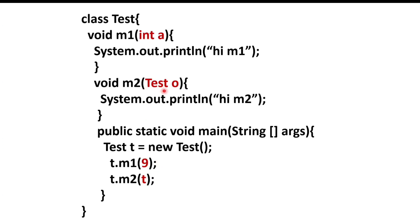Similarly, we can pass an object to the method as a parameter. Here I have passed an object to the m2 method, so at the time of method calling I need to pass an object of a class as a parameter, because this method receives an object as a parameter. So how can we pass 'this' keyword instead of an object, and what is the need of it? All of that we are going to discuss in this tutorial.